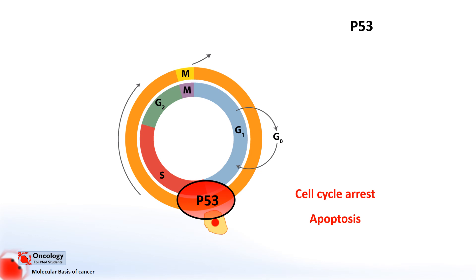While most cancers acquire p53 mutations at some point via spontaneous mutations, in rare cases people can inherit damaged p53 genes. Those that do inherit these develop something called Li-Fraumeni syndrome, whereby something like 50% of people end up developing a cancer by the age of 30.